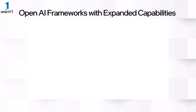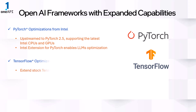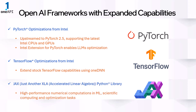Our set of AI resources also supports open standard AI frameworks and libraries. With the 2025.0 release, the PyTorch optimizations from Intel have been upstreamed to PyTorch version 2.5 with support for the latest Intel CPUs and GPUs. The Intel extension for PyTorch now comes with LLM optimization capabilities. The TensorFlow optimizations from Intel in conjunction with the OneDNN library help boost performance and scalability of TensorFlow workloads, while the JAX Python library has been integrated into the AI tools, allowing accelerated numerical and scientific computing and optimization tasks in machine learning models.